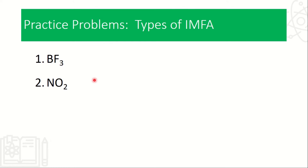That will be all for this topic. This will be left for you to answer — identify the types of IMFA: either London dispersion, dipole-dipole, hydrogen bond, or ion-dipole. Write your answer down in the comment box. And that will be all for this video lesson. Have a nice day.